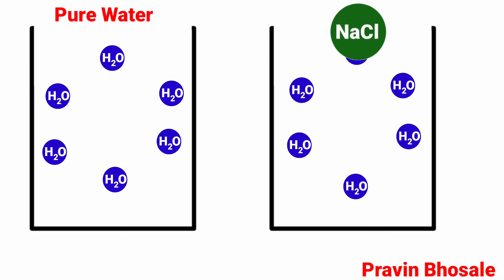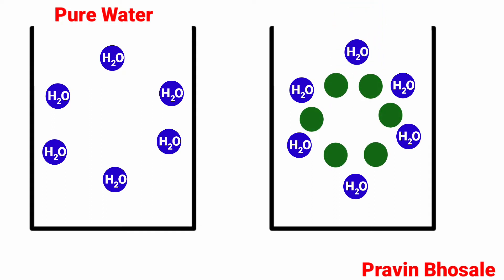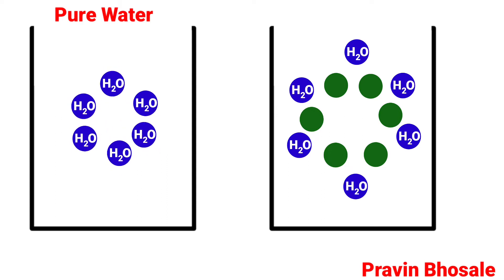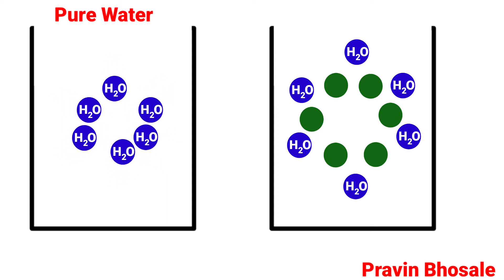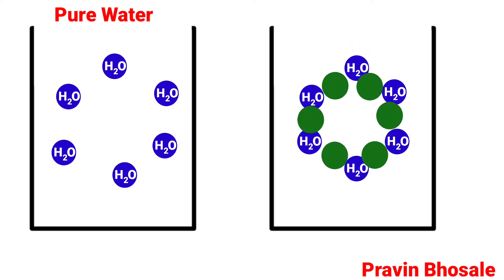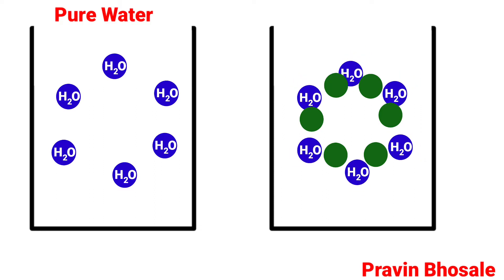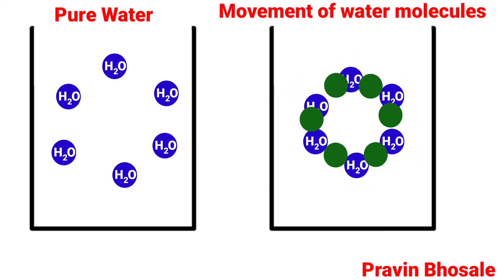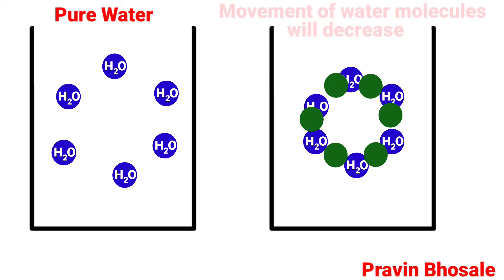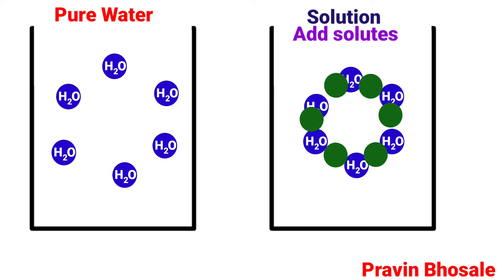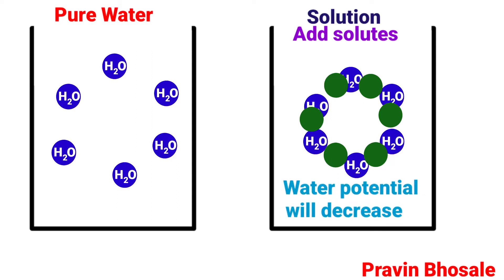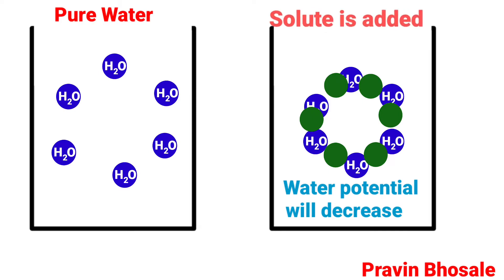Now if we add sodium chloride to pure water, it will diffuse. In pure water, water moves freely with maximum water potential of zero. But sodium obstructs the water molecules, decreasing their movement. So in a solution, when we add solute — such as sugar or salt — it obstructs water molecule movement and water potential decreases. When solute is added to pure water, its water potential decreases.